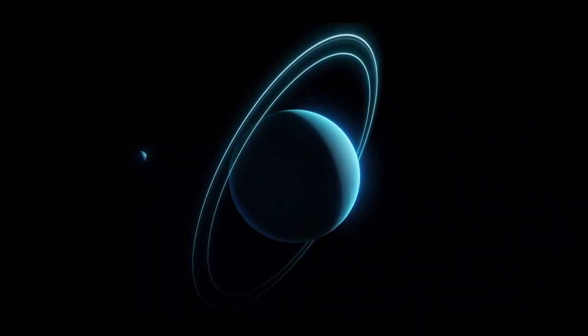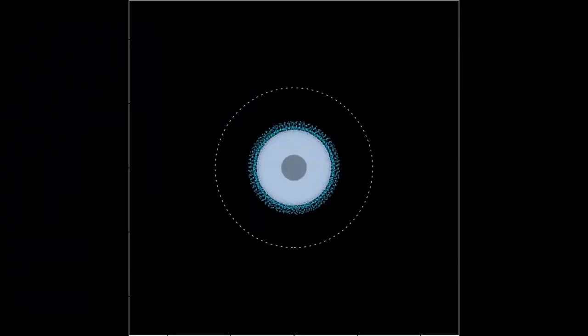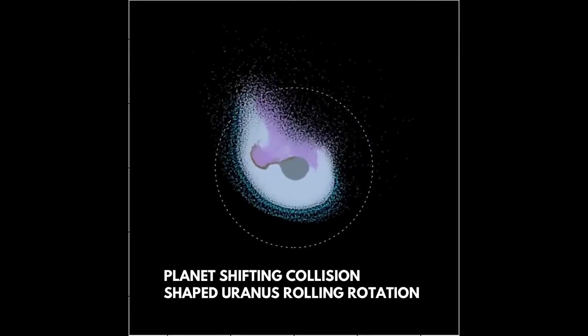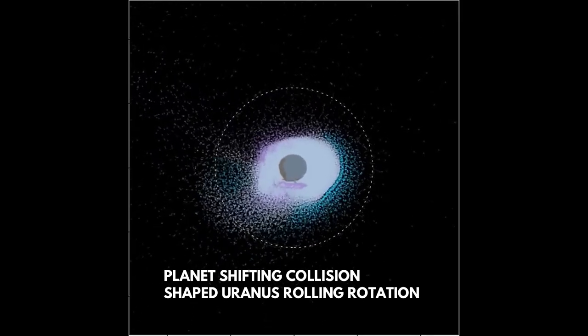How did this all happen? One theory is that a body the size of our Earth collided with Uranus a long time ago, radically throwing off its rotation. Until we know for sure, the planet's strange tilt remains one of the great mysteries in the dance of the universe.